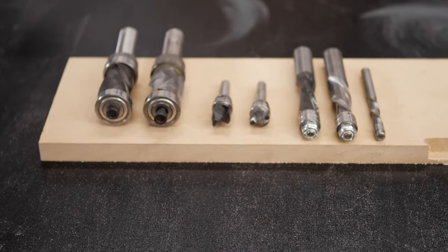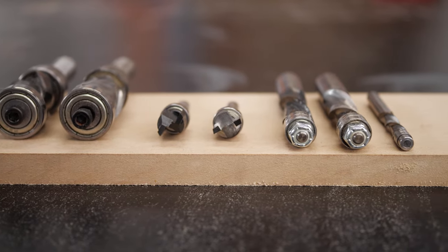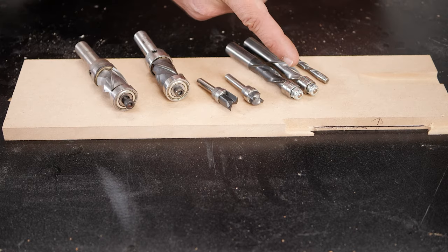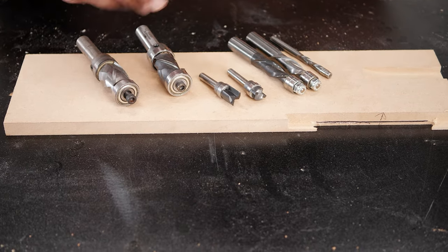The next type of bit I want to talk about are bearing bits. Now these come in three different types: bearings on the bottom of the bit, bearings on the top of the bit, or bearings in both locations.